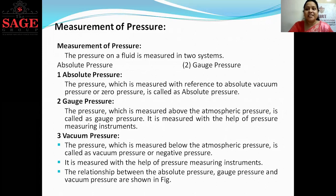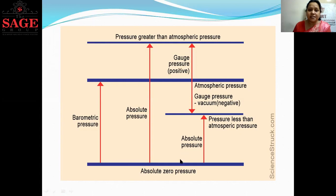The first is absolute pressure and the second is gauge pressure. Absolute pressure is the pressure which is measured with reference to absolute vacuum pressure, as shown in this figure. The absolute zero pressure is also called the absolute vacuum pressure, and it serves as the reference line and datum line used for absolute pressure.